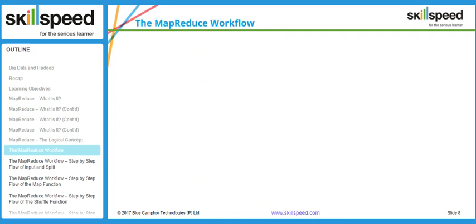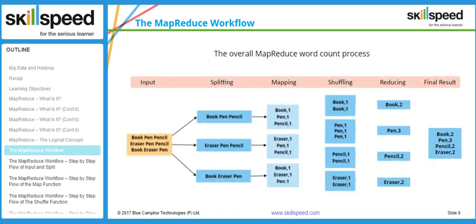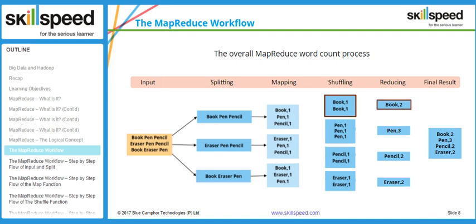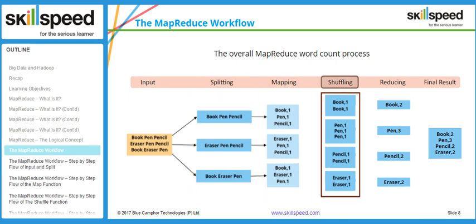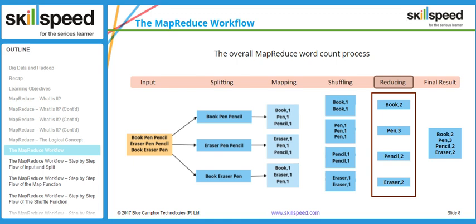Let's understand this concept with an example. We have an input dataset which is a set of words like book, pen, pencil, eraser, etc. We want to run a word count program — the idea is to count the occurrence of every word and sum it up. For example, the word 'book' has repeated two times so we should get 'book, 2', and the word 'pen' has repeated three times so we should get 'pen, 3'. The four phases are: splitting, mapping, shuffling, and reducing.